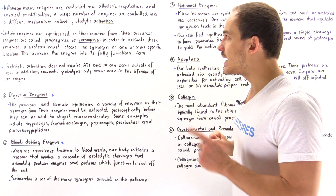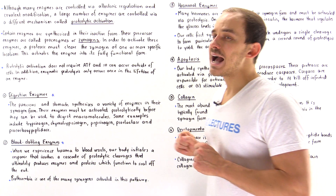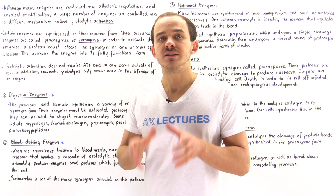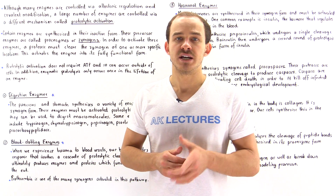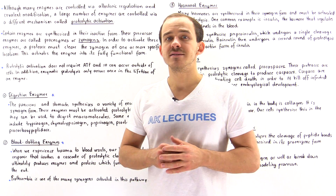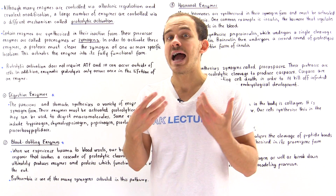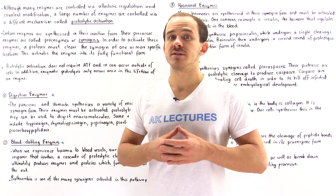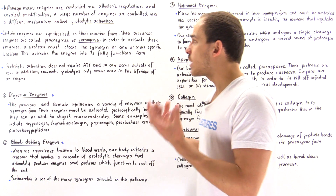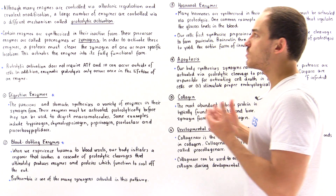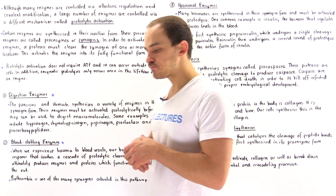On the other hand, unlike phosphorylation, proteolytic activation does not require ATP. That means those enzymes and proteins which are found outside our cells in the extracellular environment can readily undergo the process of proteolytic activation.